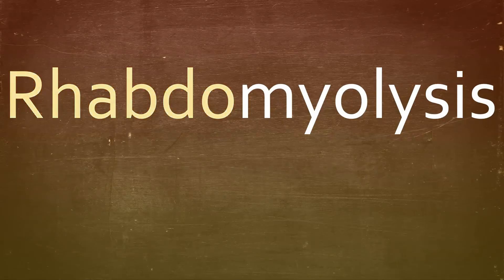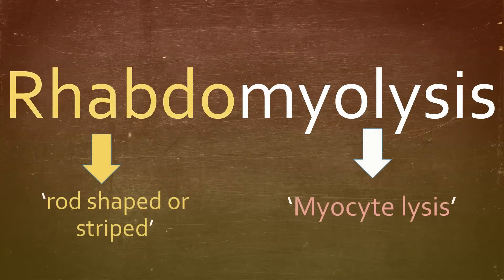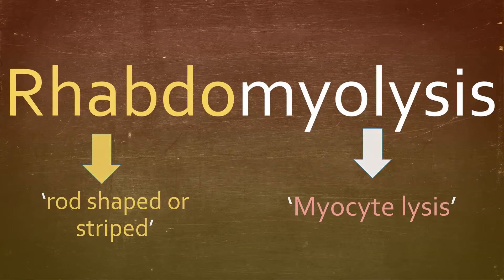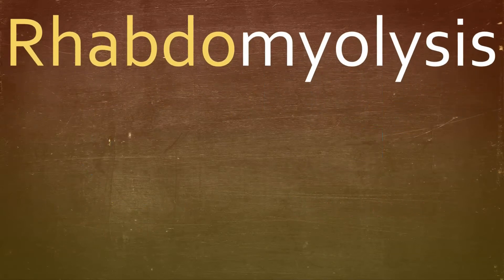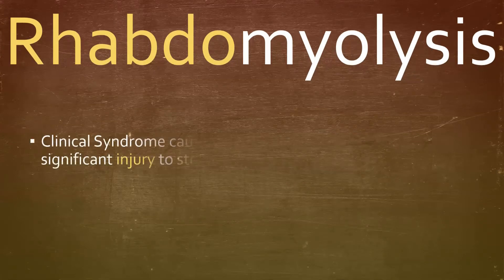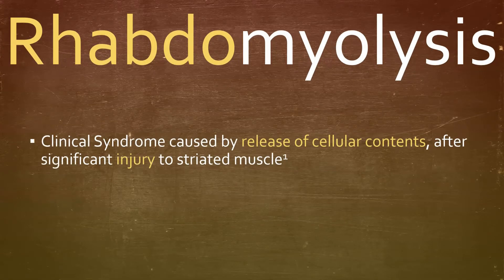Rhabdomyolysis. Let's start by splitting this word up. Rhabdo gives us rod-shaped or striped, and myolysis gives us myocyte lysis. So it's essentially the lysis of striped muscle, i.e., striated muscle, giving us the definition: a clinical syndrome caused by release of cellular contents after significant injury to striated muscle.